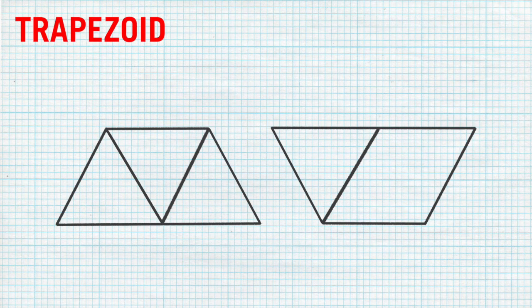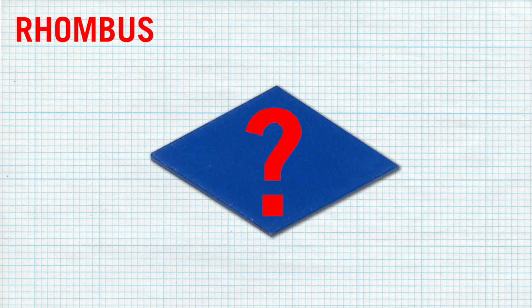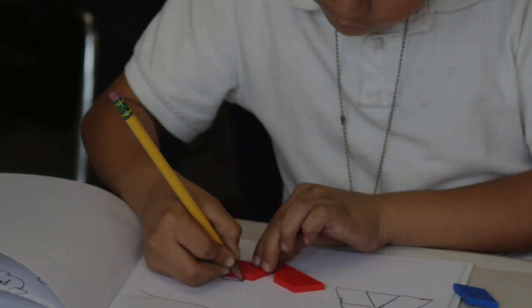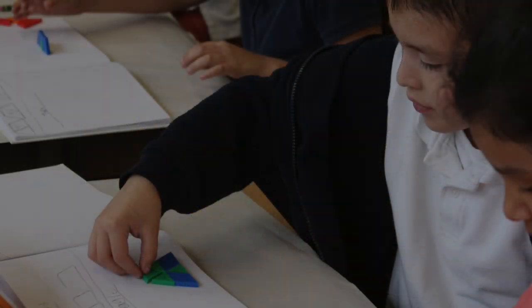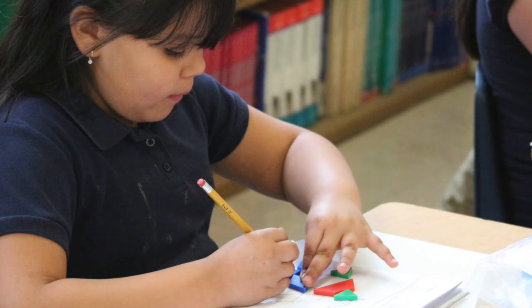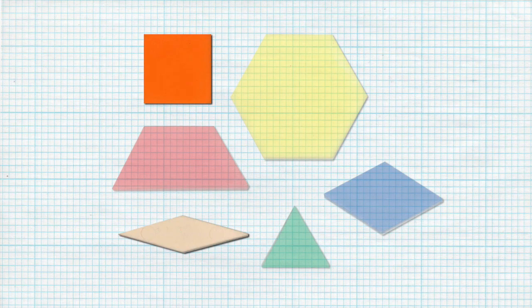Now, ask your students to find both ways to create a trapezoid using more than one block. Finally, ask students to find a way to create a rhombus using more than one pattern block. When finished, ask your students questions like: What were some of your strategies for finding shapes? How did you make sure your solutions were all different? What helped you decide that you had found all the possible combinations? Why didn't you use the orange square and the tan parallelogram?